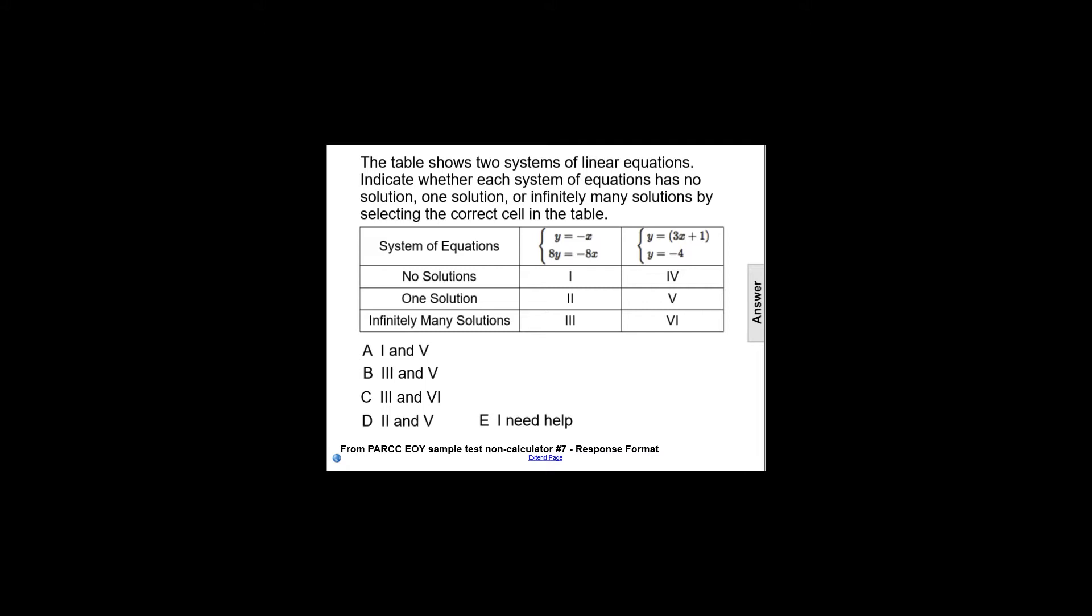It'll be very easy to see the number of solutions a system has if both equations in the system are written in slope-intercept form. So let's look at the first column system where we have y equals negative x and 8y equals negative 8x.